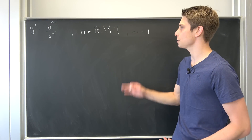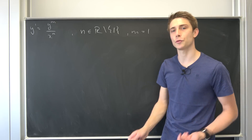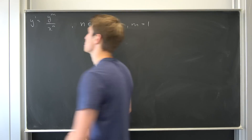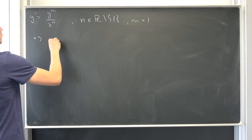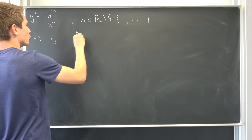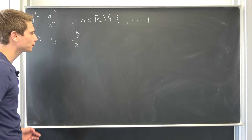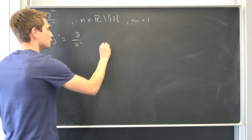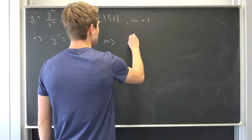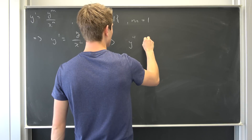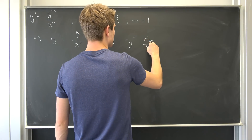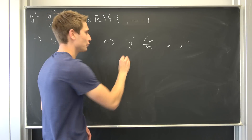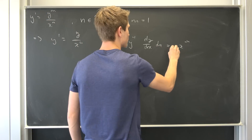Now we consider the first of two special cases. Case one: n is an element of the real numbers without 1, and m equals 1. Plugging this in, we get y prime equal to y to the first power over x to the nth power. Multiplying both sides by the reciprocal of y (not equal to zero), we get y to the negative 1st power times dy/dx equal to x to the negative nth power.